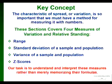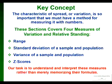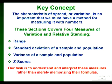The characteristic of spread or variation is so important in statistics we have to have numbers that measure it. We don't want to just say there's a little bit of spread or a lot of spread — we want an actual number. These sections cover four measures of variation and relative standing: range, standard deviation, variance, and Z-scores. Two of them are easy to find by hand, but two we'll find on the calculator. You'll need to know what it means when the calculator tells you the standard deviation is 2.7 — is that big or small? We'll figure it out.